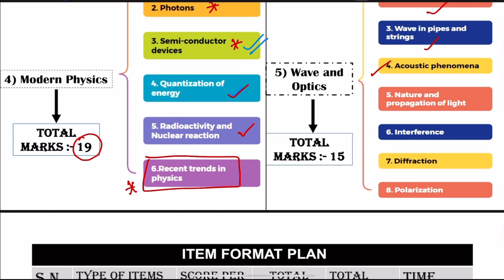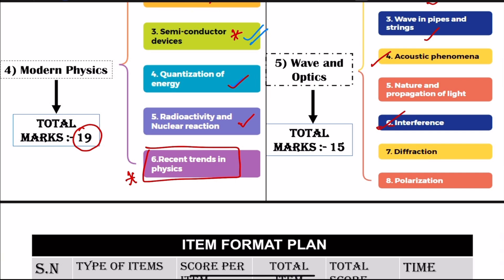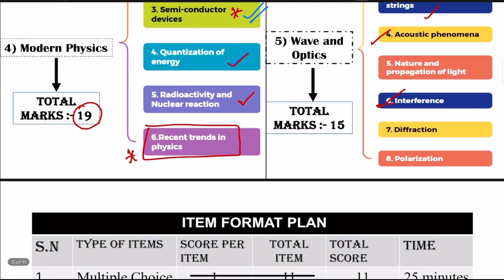Huygens' principle — interference is important. We have the phenomenon of interference, and a key highlight topic is Young's double slit experiment. Describe Young's double slit experiment and obtain the expression for nth order maxima. Then diffraction: single slit diffraction, resolving power of optical instruments, diffraction pattern, and expression for the position of nth order maxima.